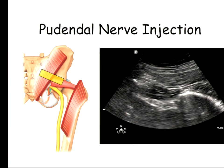At the sciatic notch you will see gluteus maximus muscle, piriformis muscle, the ischium, and the large sciatic nerve deep to the piriformis. To identify when you have reached the ischial spine level: the ischium profile changes from curved - because at the notch level it forms the curved posterior wall of the hip socket - to long and straight at the ischial spine. Additionally, the piriformis muscle disappears, the sacrospinous ligament becomes visible as a medial extension, and you can see the pudendal artery.